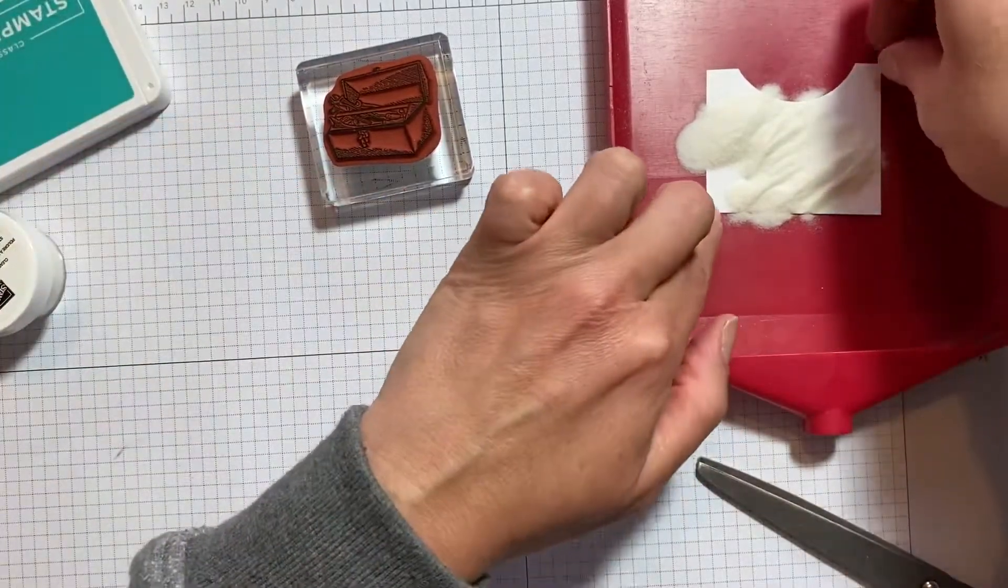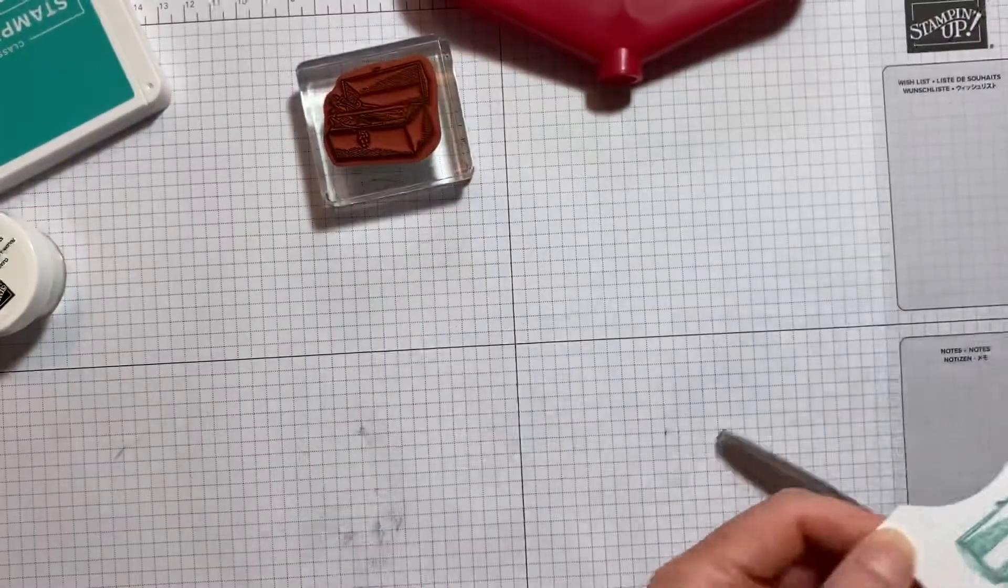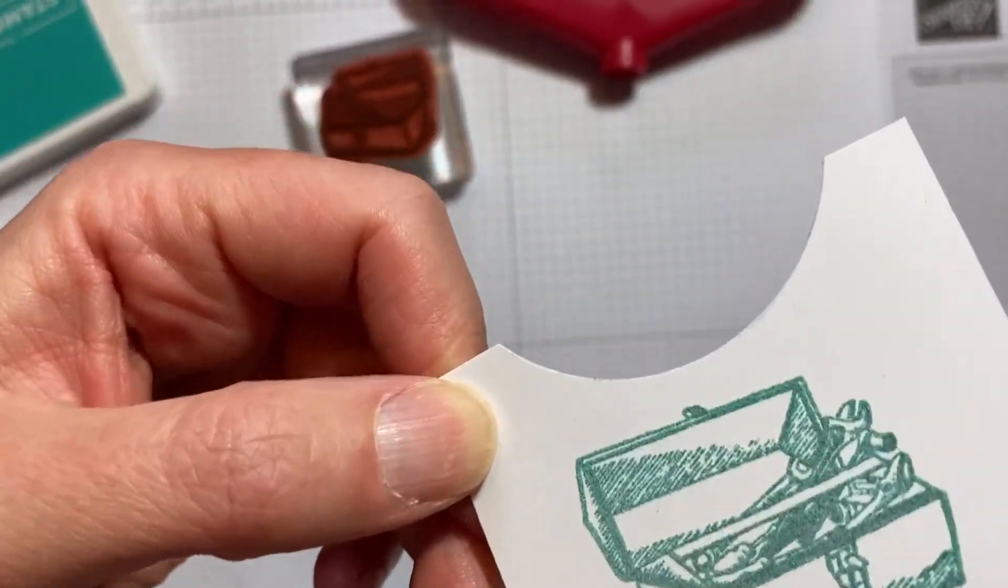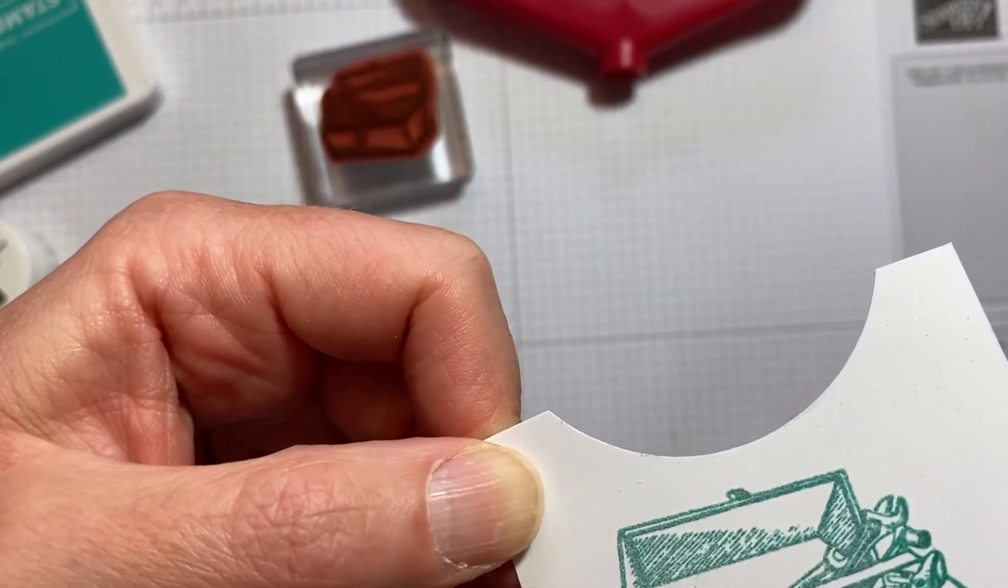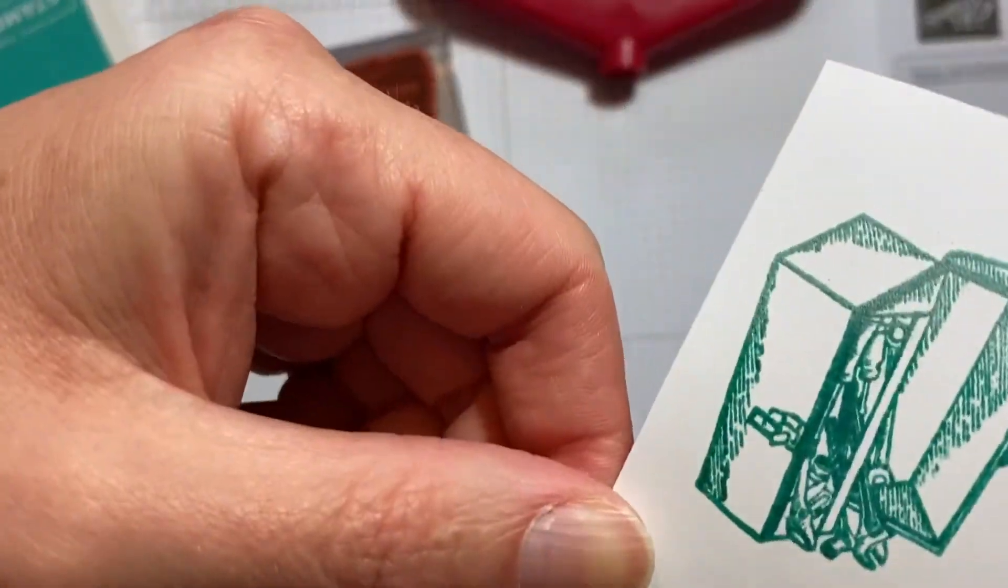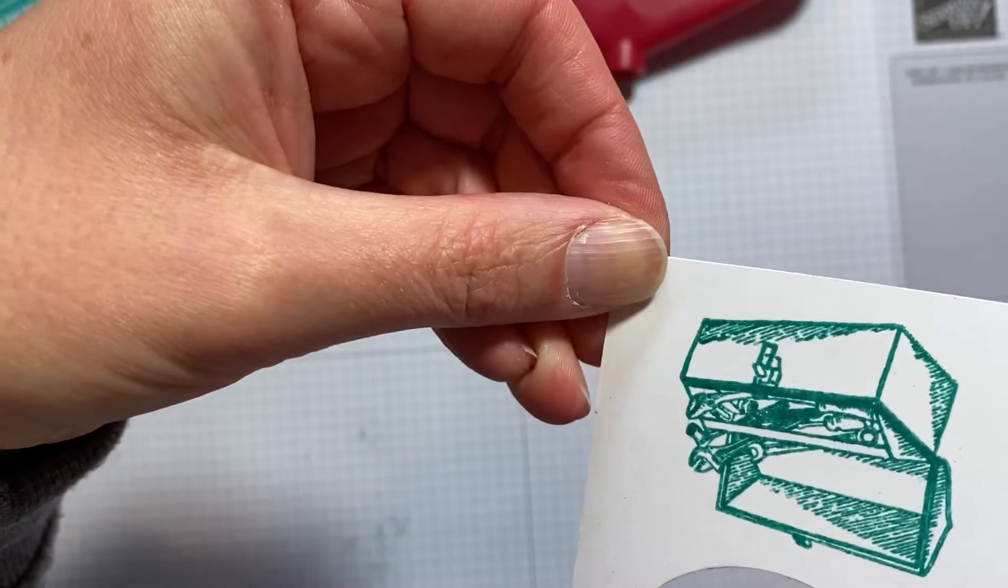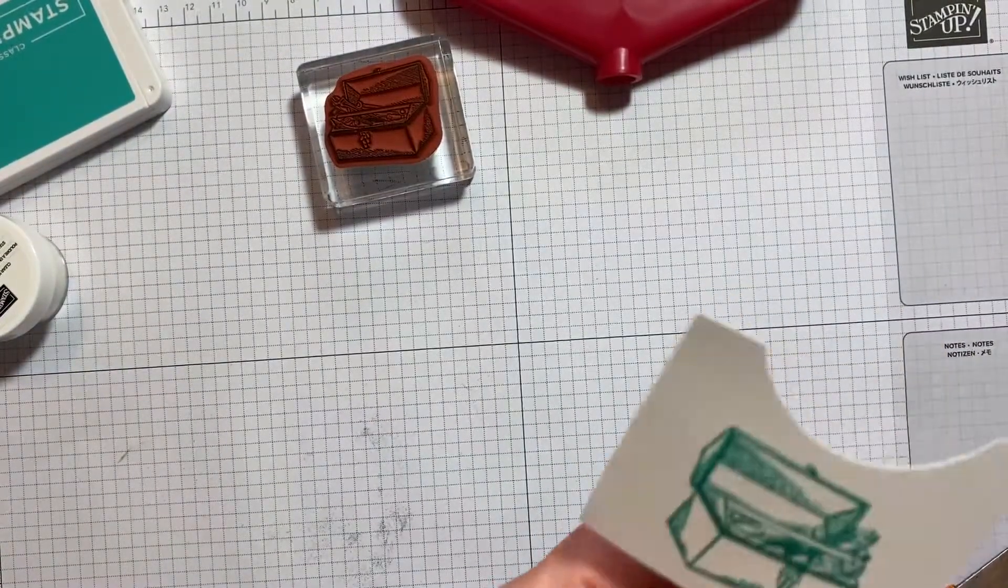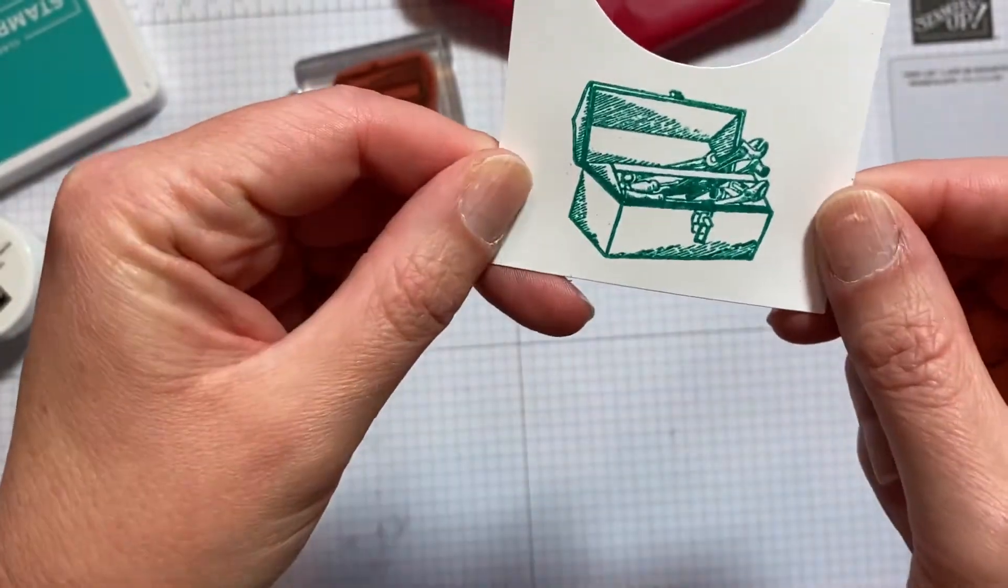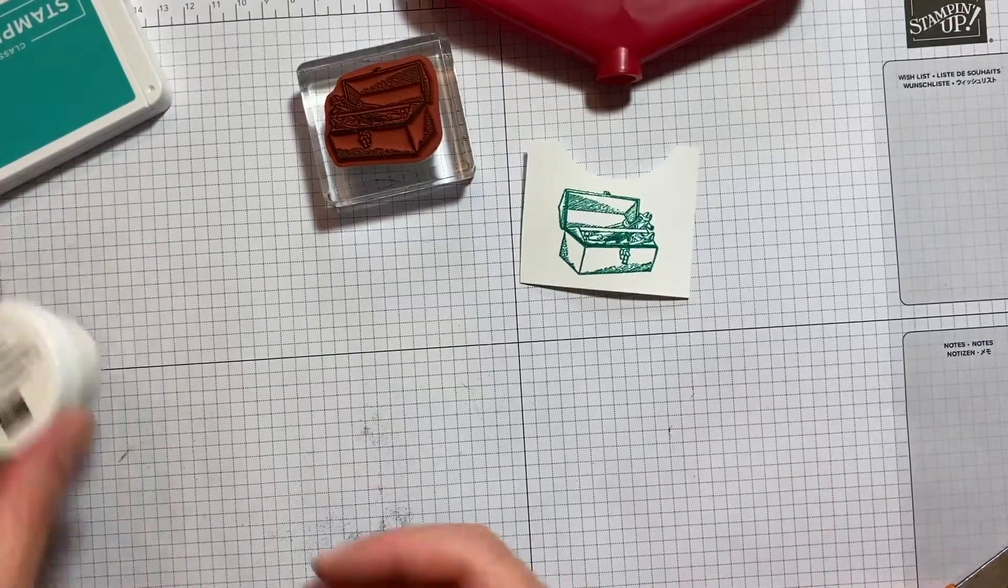You can see that looks pretty dull and uninspiring at the minute, doesn't it? So we'll bring the heat tool in again, and if we just watch, you can see that shine starting to appear. And we have effectively embossed in Bermuda Bay ink. Now I think that's pretty cool. I hope you agree. That's one of my other favorite techniques with embossing powder.